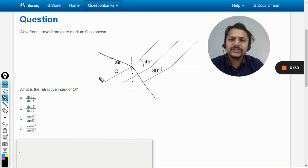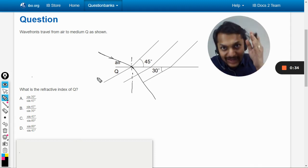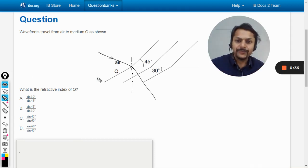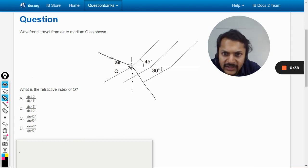So the first thing that we have used here, the first principle that we have used here, is that the light ray is perpendicular to the wavefront. Fine. And this angle will be taken as the incident angle, this angle will be taken as the refracted angle.